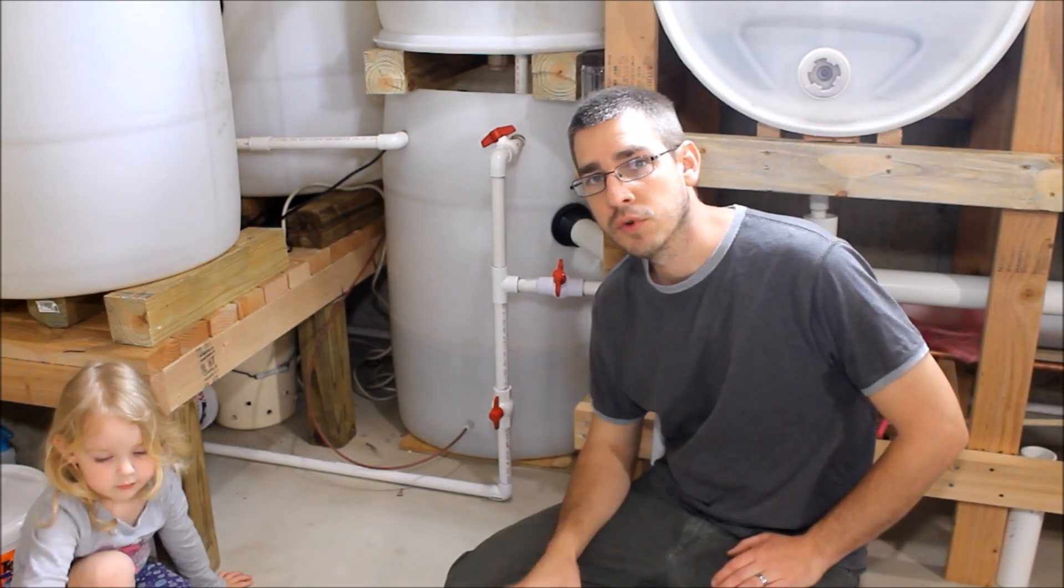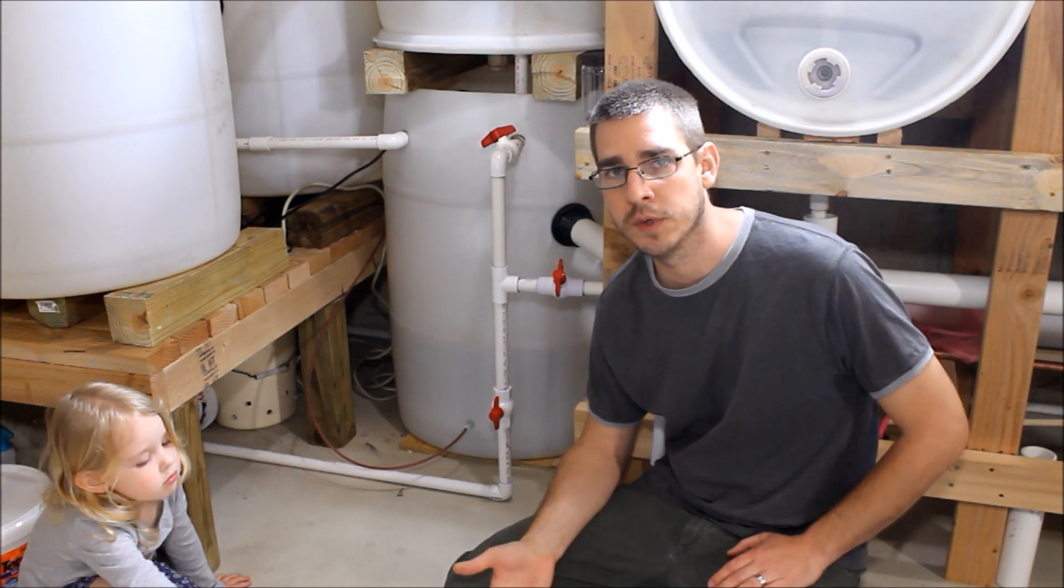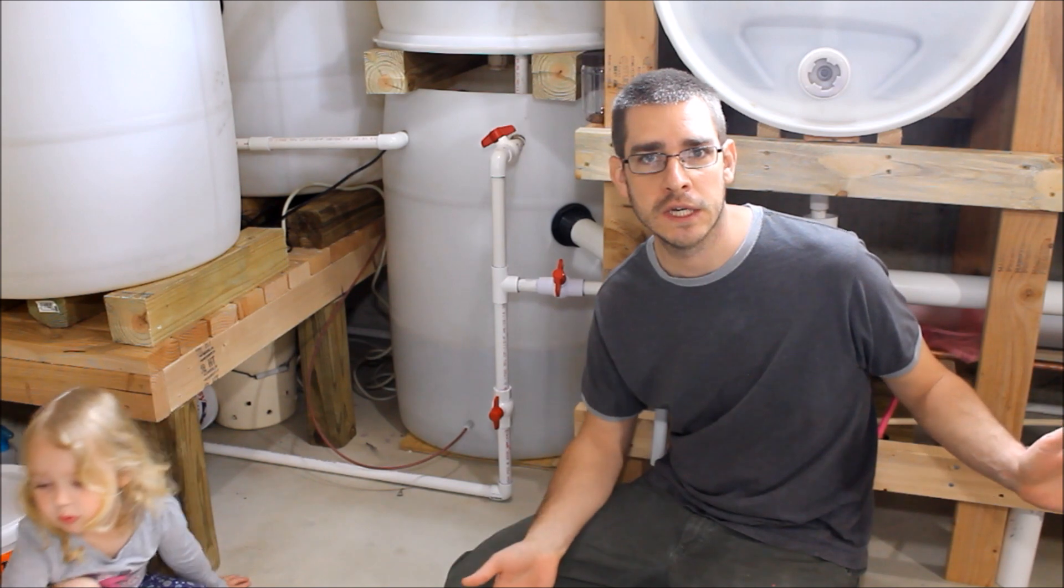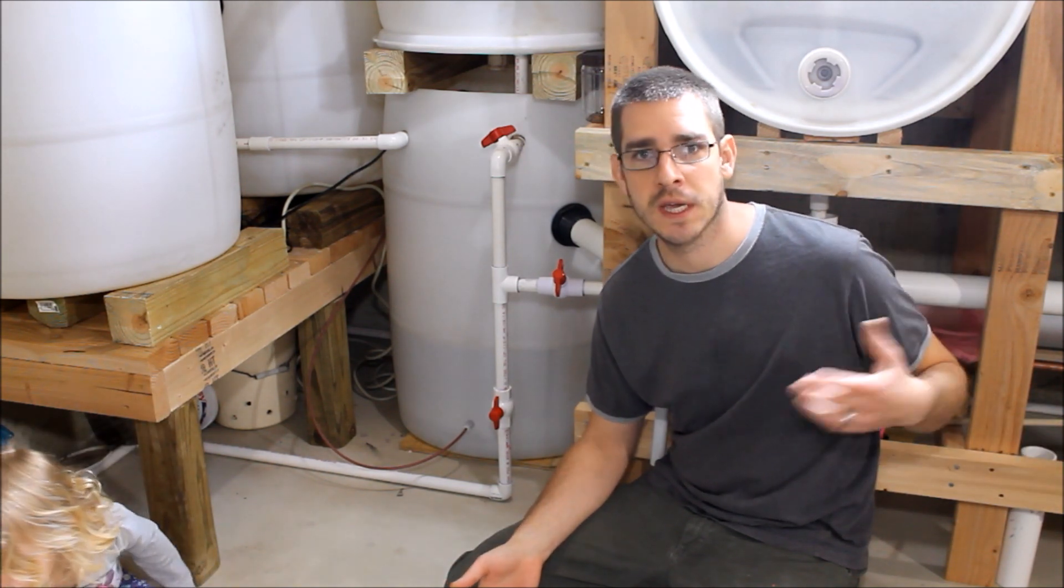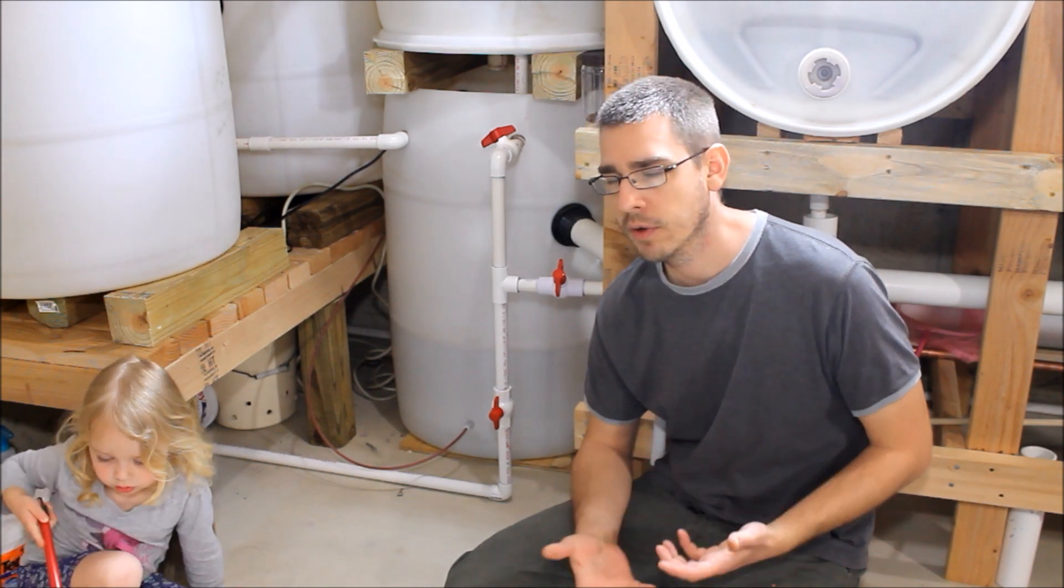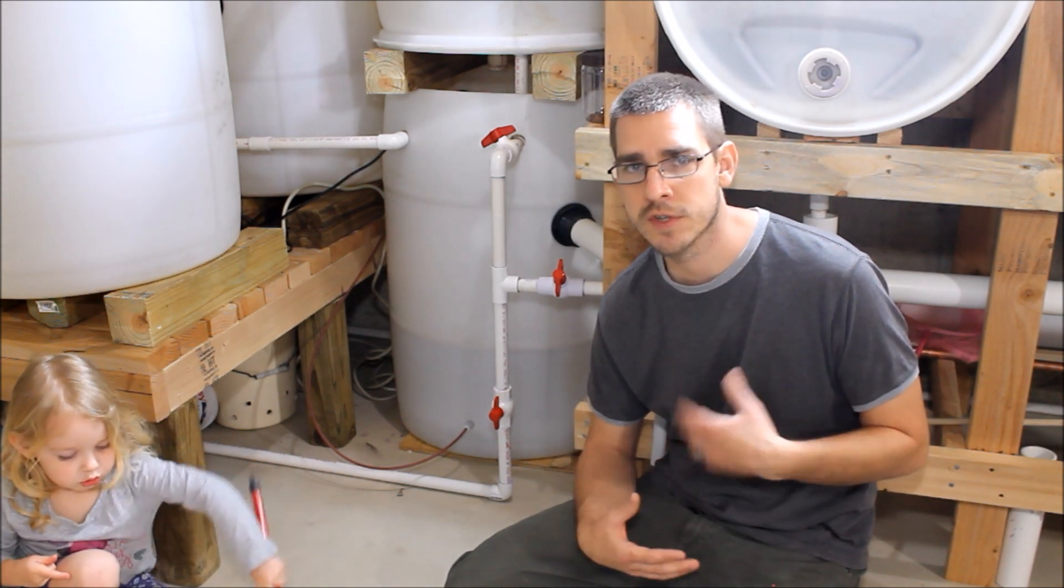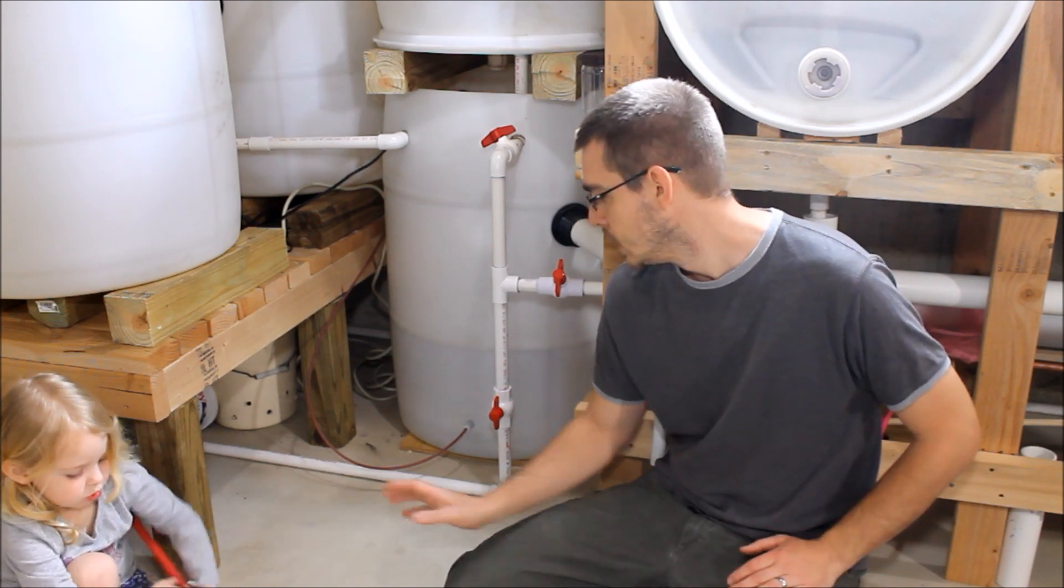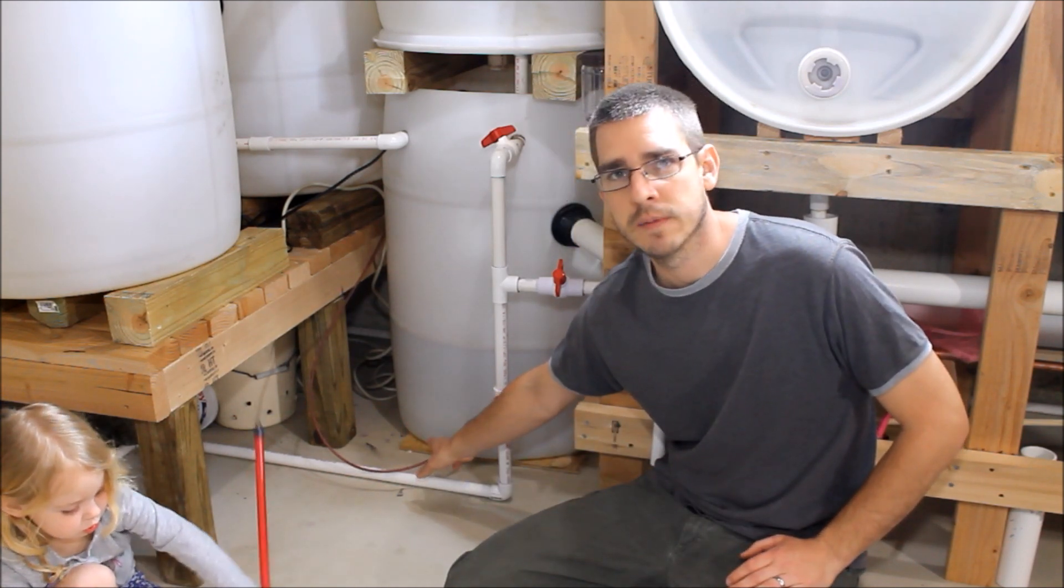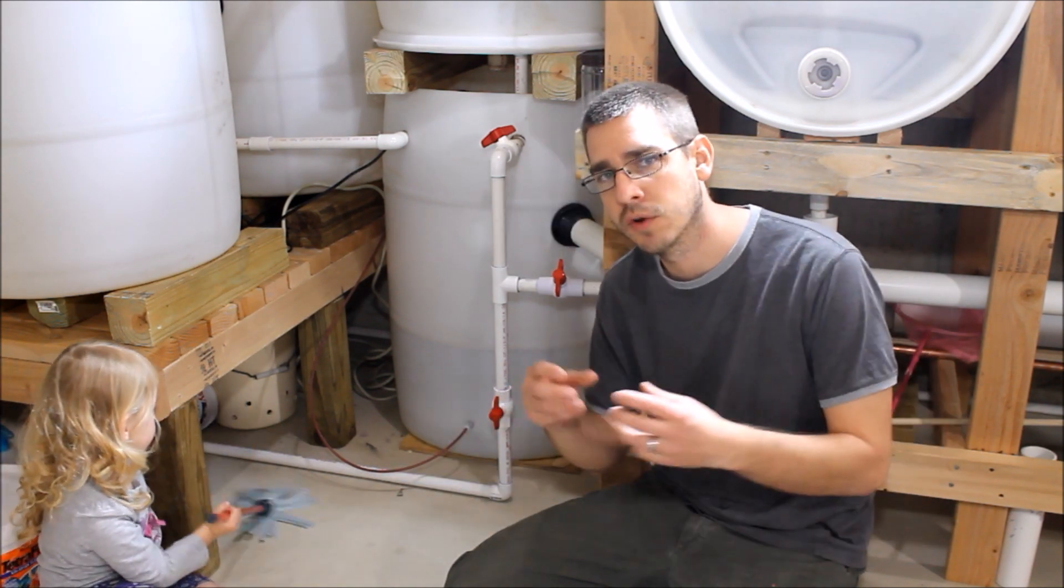One of the things that I really didn't want to have to do with the system is constantly try to add water to it and keep topping it off all the time. Obviously there's evaporation going on here, and the plants are uptaking water and things like that, so you do have to add water to the system constantly. And I didn't really want to have to mess with that. I didn't want to have to forget or worry about the system water levels getting too low. So when I designed the system, I put in this little auto top-off, and basically all this is is just a small little float valve.